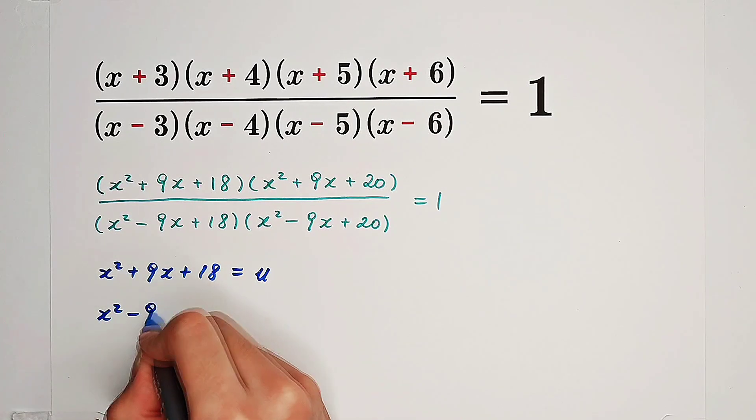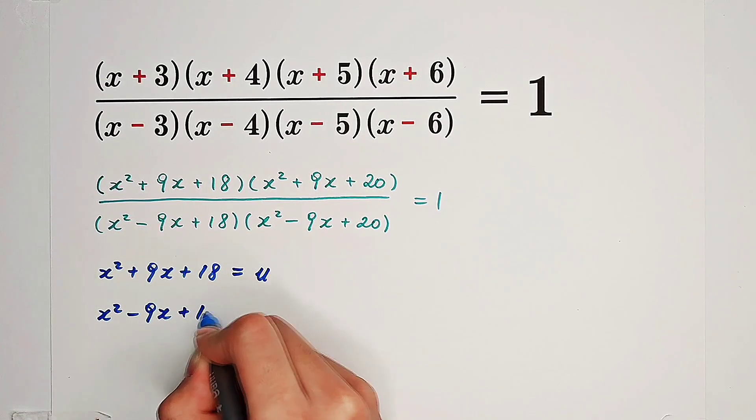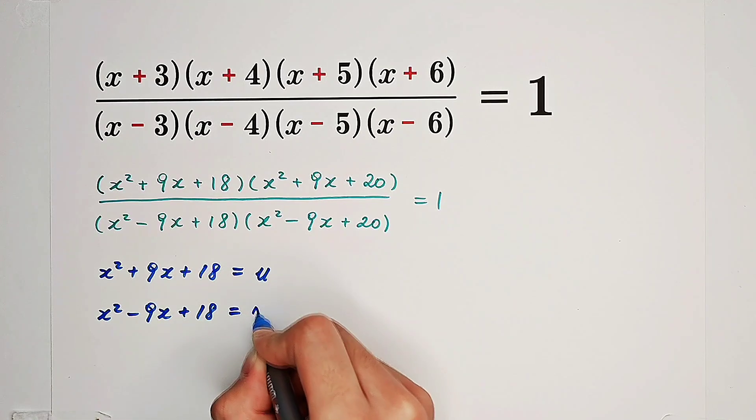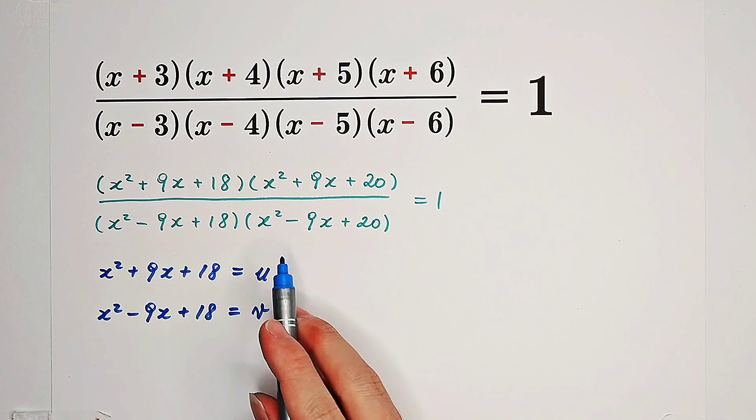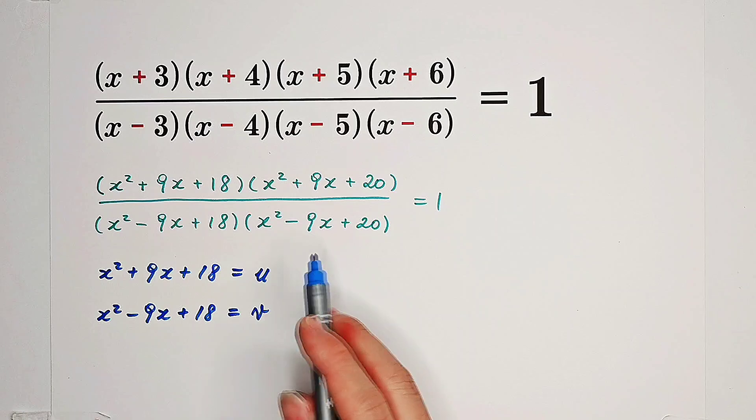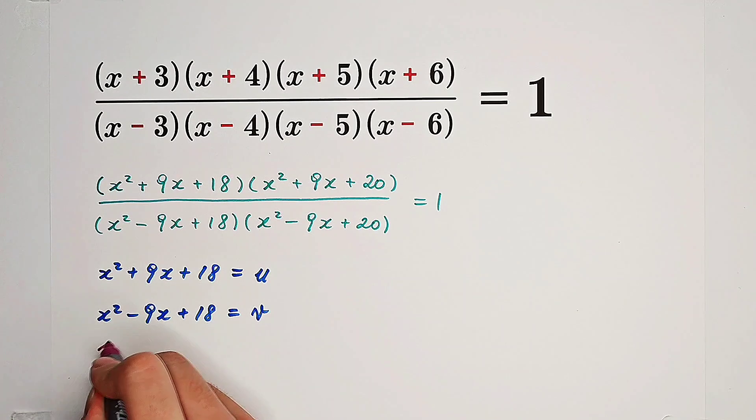If we let x squared minus 9x plus 18 be v, then x squared minus 9x plus 20 will be v plus 2.